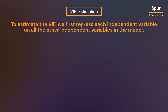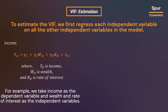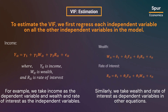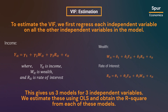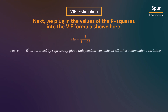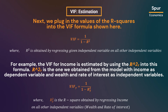To estimate the VIF, we first regress each independent variable on all the other independent variables in the model. For example, we take income as the dependent variable and wealth and rate of interest as the independent variables. Similarly, we take wealth and rate of interest as dependent variables in other equations. This gives us three models for three independent variables. We estimate these using OLS and obtain the R-squared from each of these models. Next, we plug in the values of the R-squares into the VIF formula shown here. The VIF for income is estimated by using R-square Y, which is obtained from the model with income as dependent variable and wealth and rate of interest as independent variables.